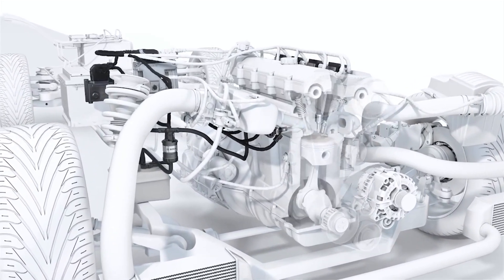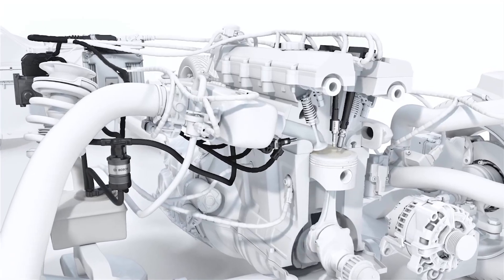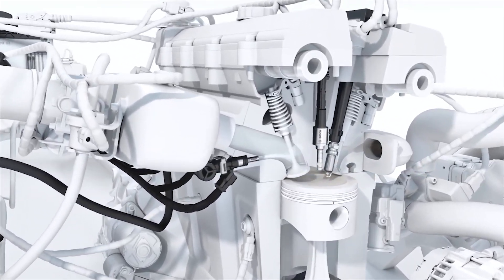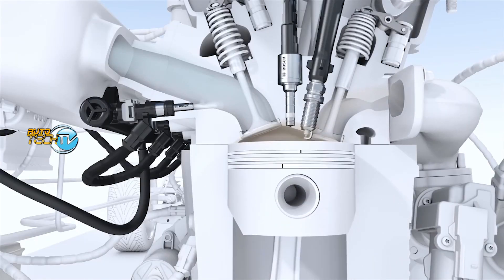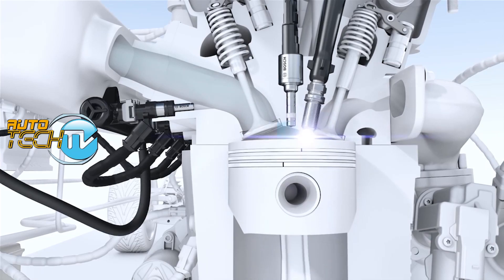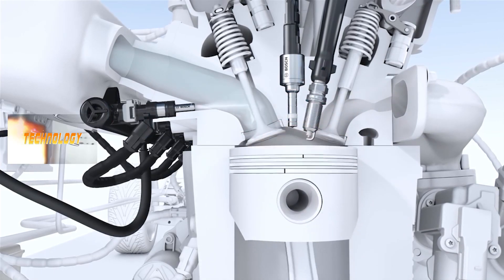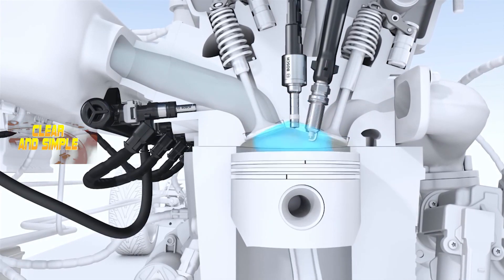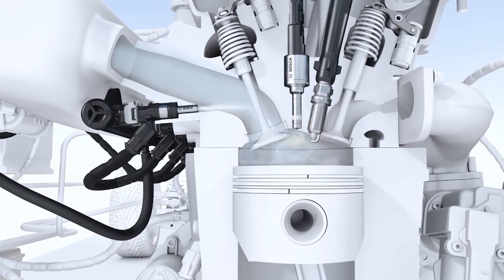The Bosch water injection system is an innovative technology designed to improve the performance and efficiency of internal combustion engines. The system works by injecting a fine mist of water directly into the engine's intake manifold or combustion chamber.